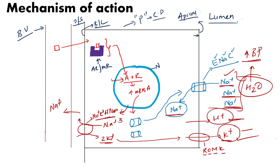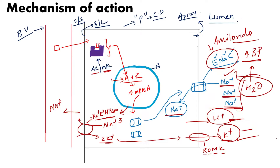An important applied aspect for pharmacology: the ENaC channels are inhibited by a drug called amiloride, which is used as a diuretic. Similarly, the aldosterone receptors — also called mineralocorticoid receptors — can be blocked so that aldosterone cannot attach there. These drugs are called aldosterone receptor blockers, and one such drug is spironolactone, which is a very potent aldosterone receptor blocker.